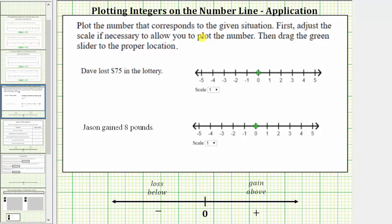We were asked to plot the number that corresponds to the given situation. In the first situation, we're told Dave lost $75 in the lottery. So because he lost $75, the number negative 75 best describes this statement. A positive 75 would represent a win or a gain of $75.